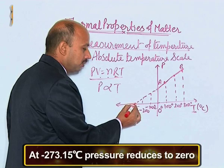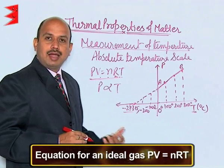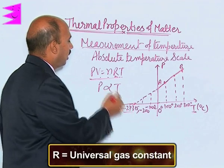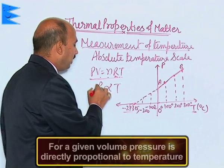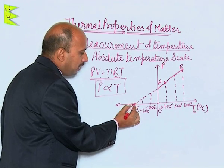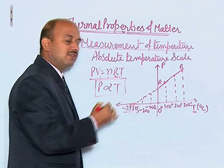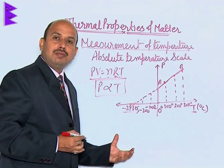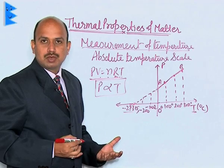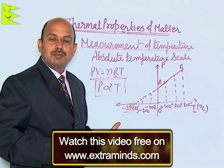At this temperature, pressure reduces to zero. Using the ideal gas equation, where n is the number of moles, R is the universal gas constant, V is volume, and P is pressure — for a given volume, P is directly proportional to T. So pressure increases with temperature, but at minus 273.15 degrees Celsius pressure becomes zero. If you go beyond this point, volume would become negative, which is impossible. Therefore, this is the minimum temperature that can be attained — minus 273.15 degrees Celsius.